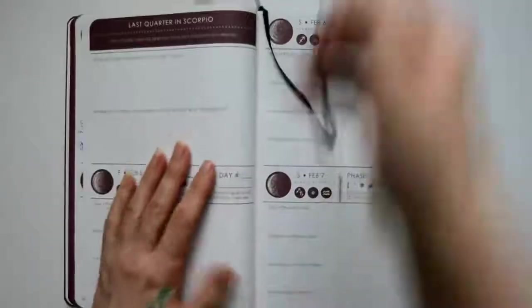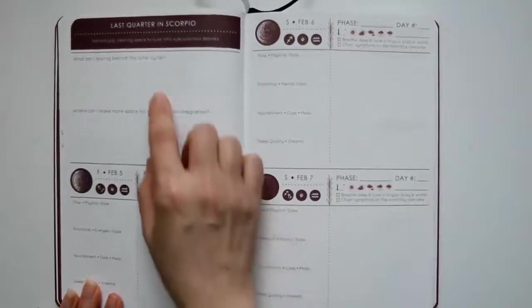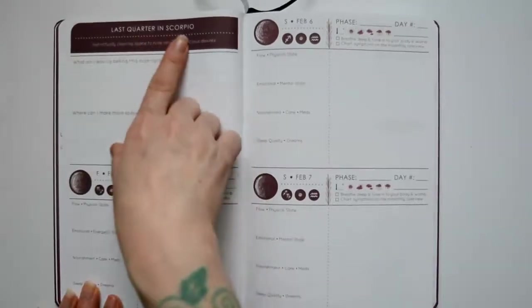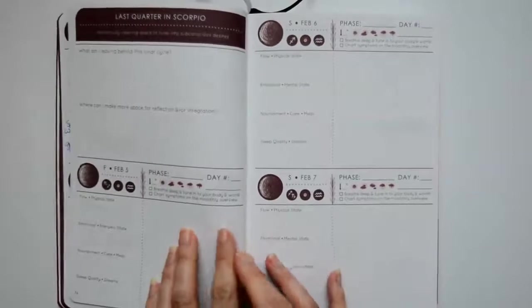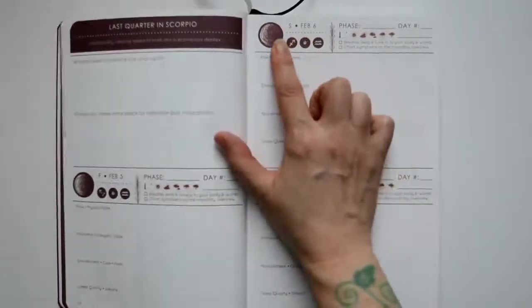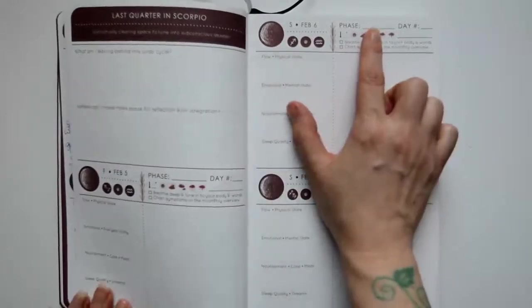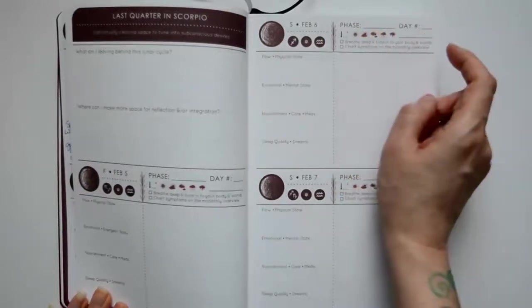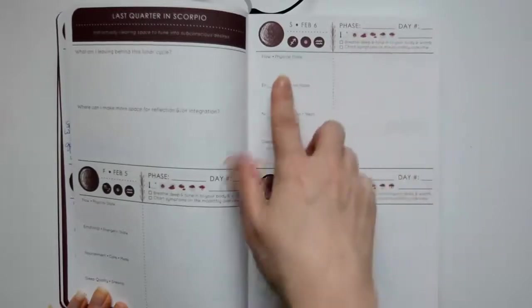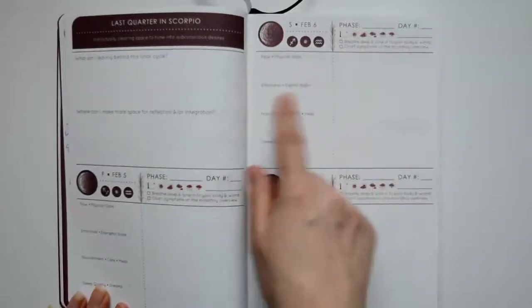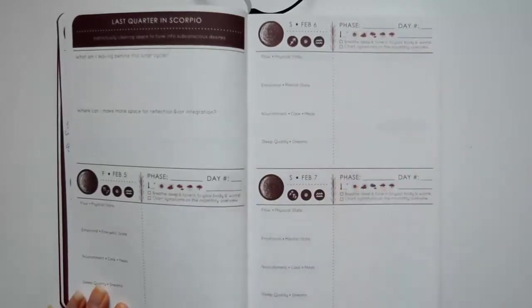And then you get to the day pages. Occasionally you'll see what quarter the moon is in. So this says last quarter in Scorpio, and it's got a couple journal prompts there. The main day sections are going to say what day it is, going to have a picture of the moon phase and what sign the moon is in. Then you write down here what phase your menstrual period is in, the day number of your cycle. And then it's got a little weather thing so you can circle if it's sunny or if it's cloudy. Then you write down physical state, mental state, nourishment, care and meds, sleep quality and dreams. And then that blank section is for whatever you want to write.